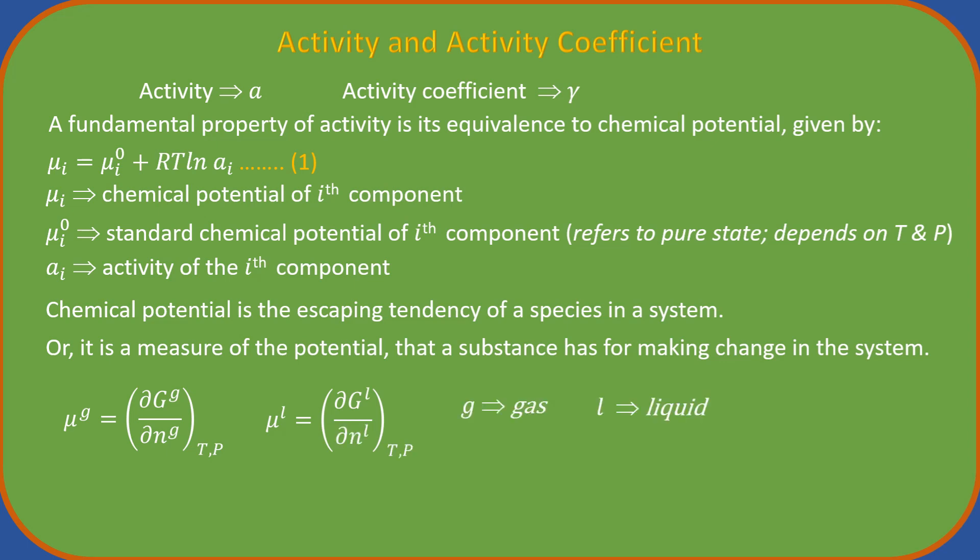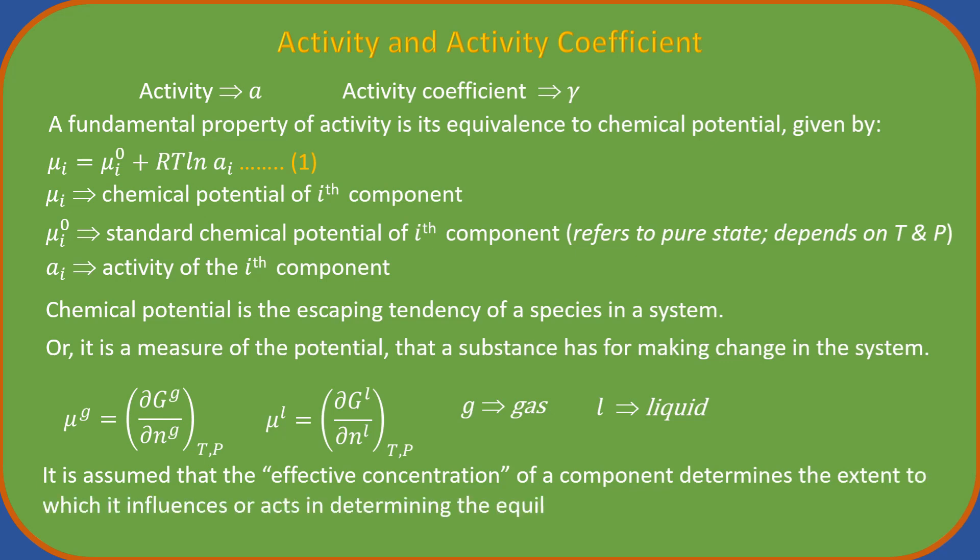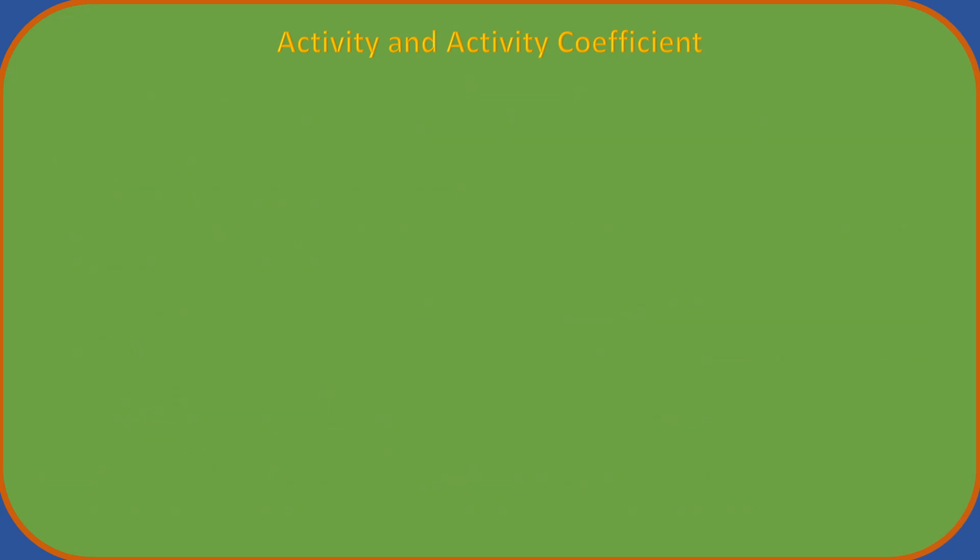When two phases of a single substance are in equilibrium with each other, then the chemical potentials of the substance in the two phases will be equal. The superscript zero refers to chemical potential of pure component. It depends on temperature and pressure. It is assumed that the effective concentration of a component determines the extent to which it influences or acts in determining the equilibrium properties of the solution. So, we use activity instead of mole fraction in equation 1.